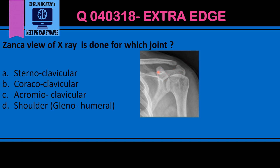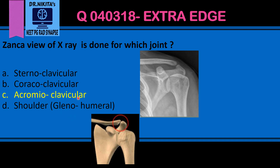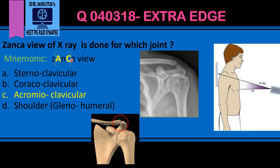This process of the scapula is the coracoid process. So correlating: the scapula, the glenoid, and humerus form the shoulder joint; the acromion process articulates with the clavicle; and that's the coracoid process. The Zanka view is done for the acromioclavicular joint. The mnemonic is in the name Zanka itself — it represents the joint between A and C, that is, the acromioclavicular joint.